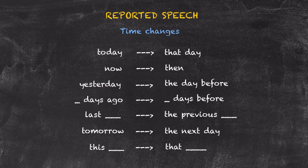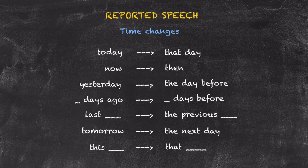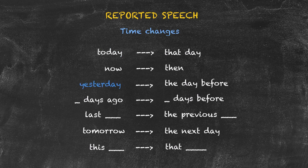Having gone through these time changes and explained them to our students, we then have to let them know that it's sometimes okay not to make these time changes — and that's only when reporting the speech as originally said does not cause confusion for the listener. For instance, if 'today' was said and today hasn't finished, we can go ahead and leave 'today' as 'today.' Similarly, if 'yesterday' in the direct speech is still yesterday in the reported speech, we don't have to change it to 'the day before.'